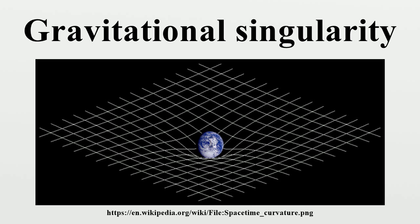In supersymmetry, a singularity in the moduli space happens usually when there are additional massless degrees of freedom at that certain point. Similarly, it is thought that singularities in space-time often mean that there are additional degrees of freedom that exist only within the vicinity of the singularity.